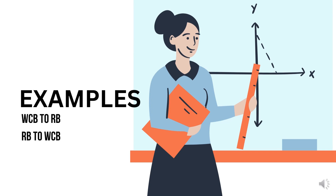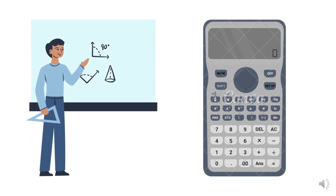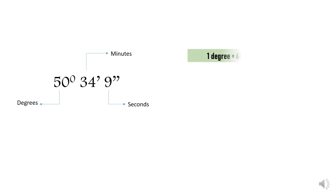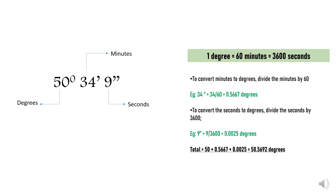Before tackling more complex problems, it's important to remember that bearing angles — whether in whole circle bearing or reduced bearing — can be expressed in degrees, minutes, and seconds. To perform arithmetic calculations involving bearings, convert all angles to a single unit, typically degrees. Keep in mind that one degree equals 60 minutes equals 3600 seconds. To convert minutes to degrees, divide by 60; to convert seconds to degrees, divide by 3600.